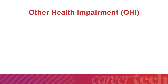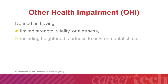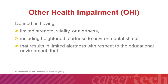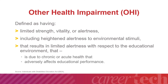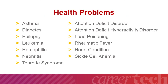Now we will discuss other health impairments. According to the Individuals with Disabilities Education Act, other health impairment is defined as having limited strength, vitality, or alertness, including heightened alertness to environmental stimuli that result in limited alertness with respect to the educational environment, due to chronic or acute health conditions that adversely affect educational performance. The Individuals with Disabilities Act lists examples of health conditions under OHI; however, this list is not exhaustive, and other conditions could qualify if they meet the criteria.